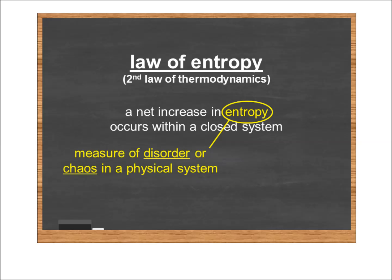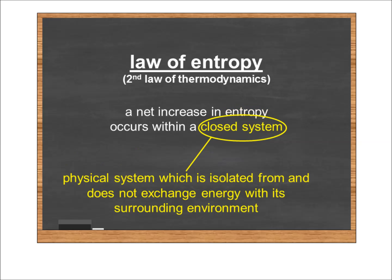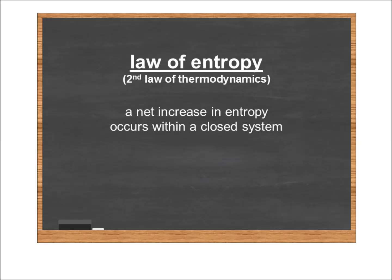Entropy, scientifically, is a measure of disorder or chaos within a physical system. A closed system is a physical system which is isolated from and does not exchange energy and matter with its surrounding environment. We're particularly interested here in the energy exchange. When a system is closed — isolated from energy input — entropy, or disorder, within that system tends to increase.